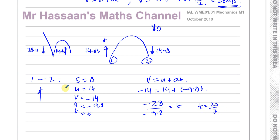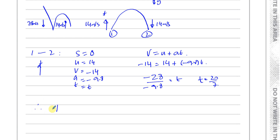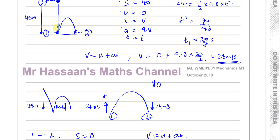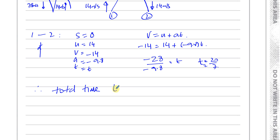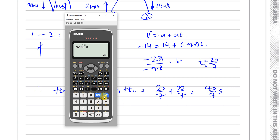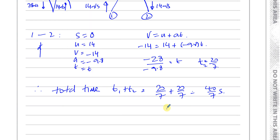The total time is time 1 plus time 2, which is 20/7 + 20/7 = 40/7 seconds. As a decimal, that's 5.71 seconds to 3 significant figures. You can leave it as 5.7 to 2SF, 5.71 seconds, or 40/7 seconds — all of those would be acceptable answers for this question.